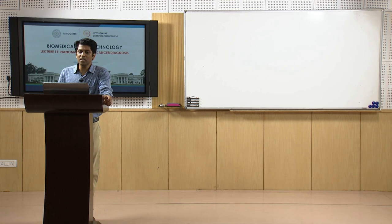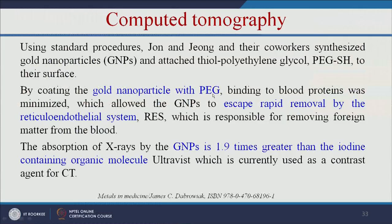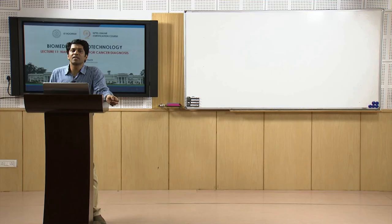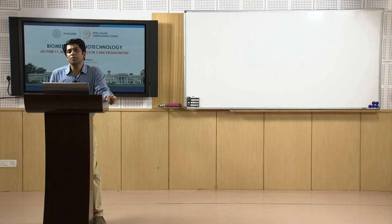Here we can use gold nanoparticles coated with polyethylene glycol, which allows them to escape rapid removal by the reticuloendothelial system responsible for removing foreign matter from the blood. The PEG coating also gives biocompatibility. The absorption of X-rays by gold nanoparticles is 1.9 times greater than iodine-containing organic molecules — improving CT scan efficiency about 2 times more than normal iodine compounds. This reduces exposure of the patient to X-rays and provides high sensitivity.